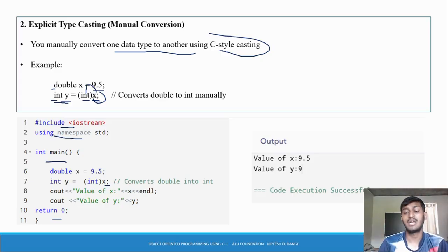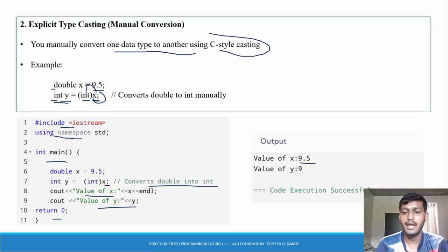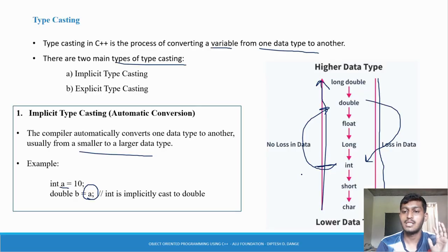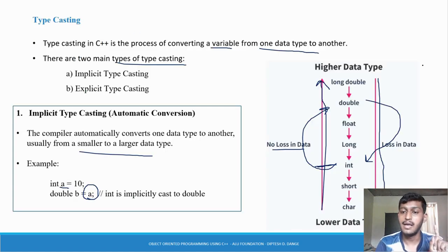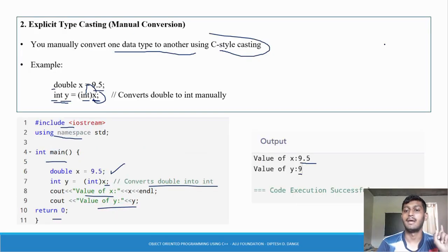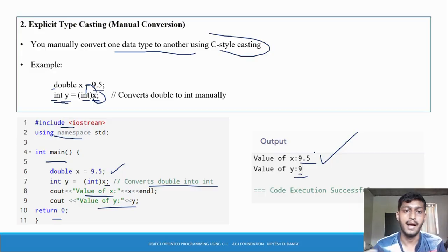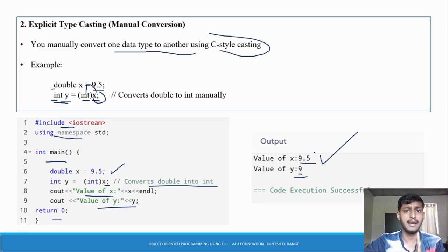The output shows value of x is 9.5 and value of y is 9. It is 9 because integer does not store decimal values — the point is gone. This illustrates data loss. When converting from a lower to a higher data type there is no data loss — 10 stays 10. But when converting from a higher to a lower data type, data loss occurs: 9.5 becomes 9, losing 0.5. This data loss happens during explicit type casting from higher to lower data types.